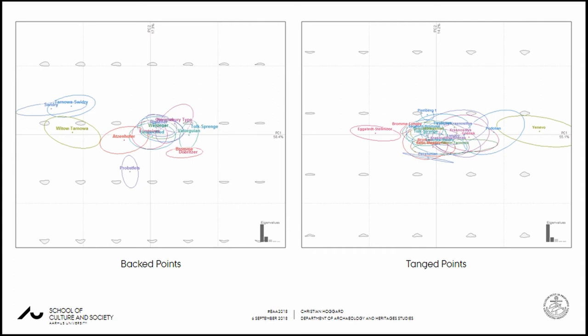On the right you would see what could be termed a clusterfuck of different sites. On the left we have the Swiderian, the Wittonian, and the Eastern European variance as distinct from all other backed point types. We see the Atzenhofer off on its own — probably one of the most interesting, as it's defined by the distinct use of a non-flint material and is here supported through the GMM approach. It's also important to note areas of homogenisation, including the Federmesser variance from the old typologies. For tanged point variance the taxonomic problems really appear, with varying levels of homogenisation.